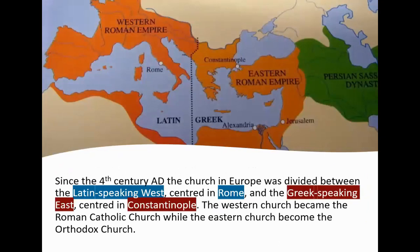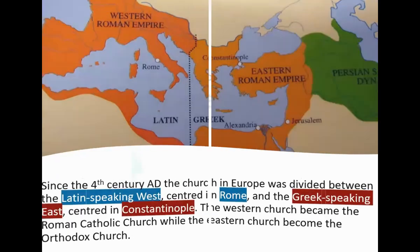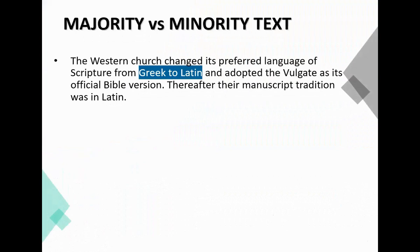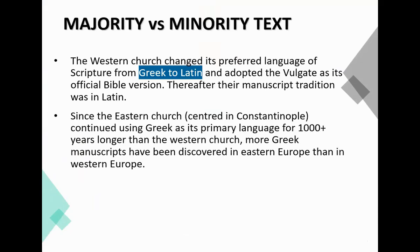Because the Western Church changed its preferred language from Greek to Latin, their manuscript tradition was Latin — they copied the scriptures in Latin, and we have a lot of Latin documents. But the Eastern Church, centered in Constantinople, continued using Greek as its primary language for an additional 1,000 years. So while the Catholic Church kept scriptures in Latin, the Orthodox Church still had it in Greek — the original language. It stands to reason that more Greek manuscripts have been discovered in Eastern Europe than in Western Europe.